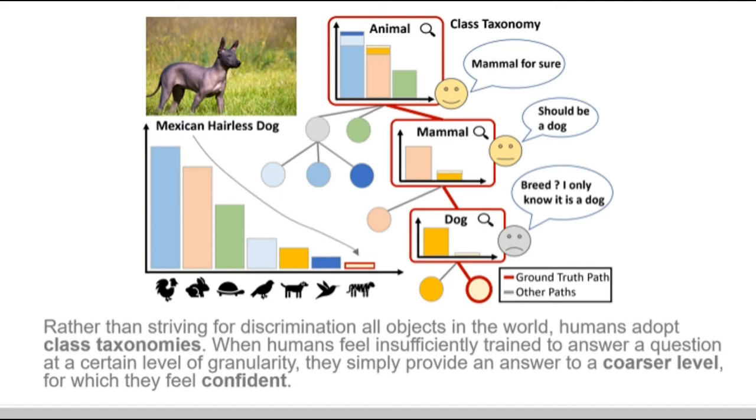When facing a question that they feel insufficiently trained to answer, they simply push the decision to a coarser taxonomy level, which they feel confident. For example, humans may change this problem into classify mammal instead of classify dog breeds.